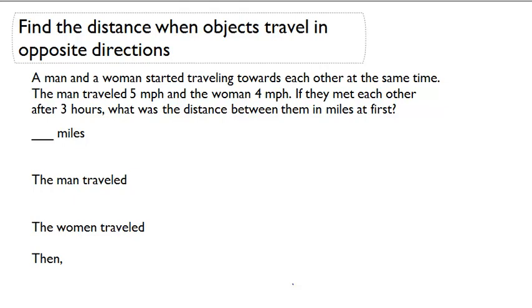Find the distance when objects travel in opposite directions. A man and a woman started traveling towards each other at the same time. The man traveled 5 miles per hour and the woman 4 miles per hour. If they met each other after 3 hours, what was the distance between them in miles at first?